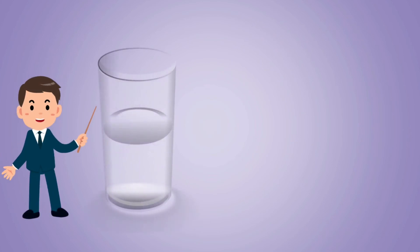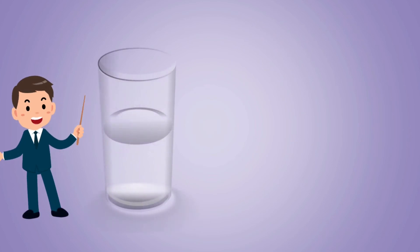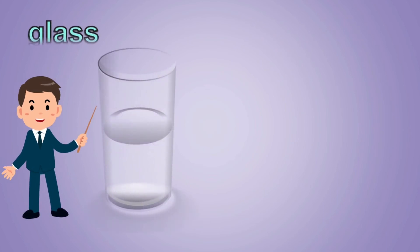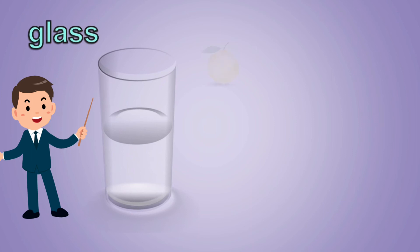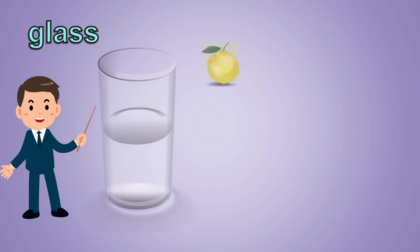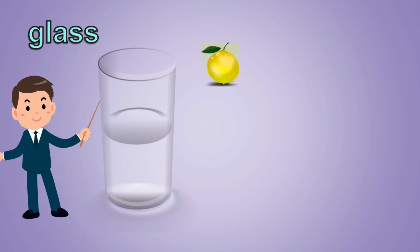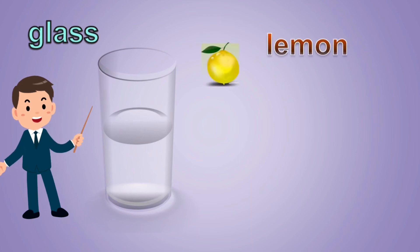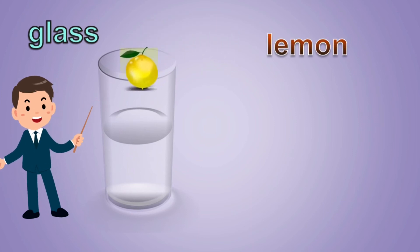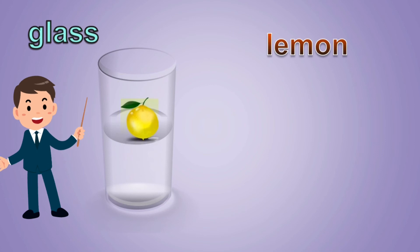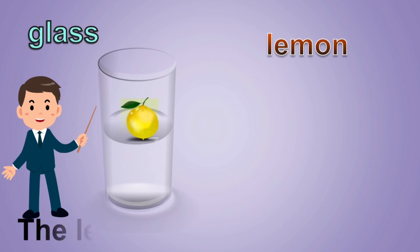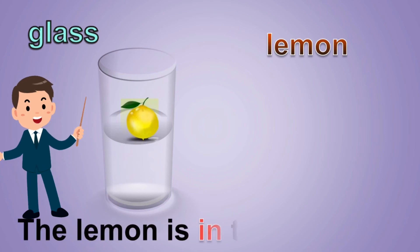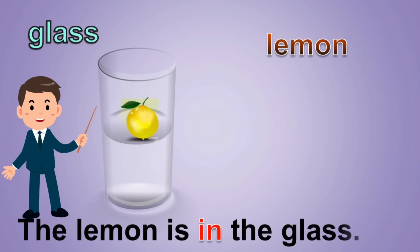What is it? It is a glass. What is that? It is a lemon. Where is the lemon? The lemon is in the glass.